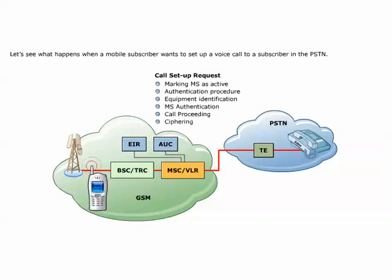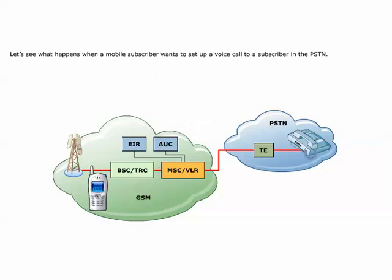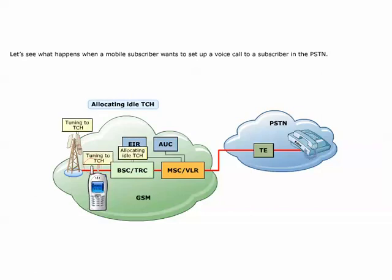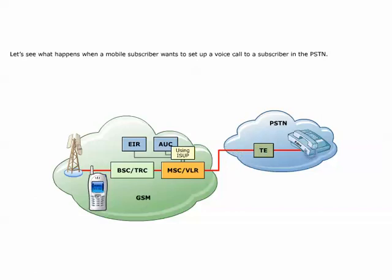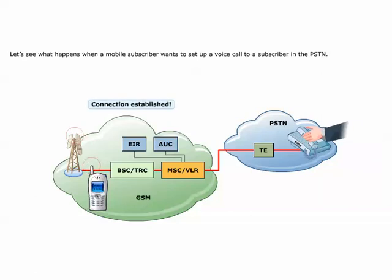The MSC VLR instructs the BSC TRC to allocate an idle TCH. The BTS and MS are told to tune to the TCH, and the SDCCH is released. The MSC VLR, using ISUP signaling, forwards the B number to an exchange in the PSTN, which establishes a connection to the subscriber. If the B subscriber answers, the connection is established.